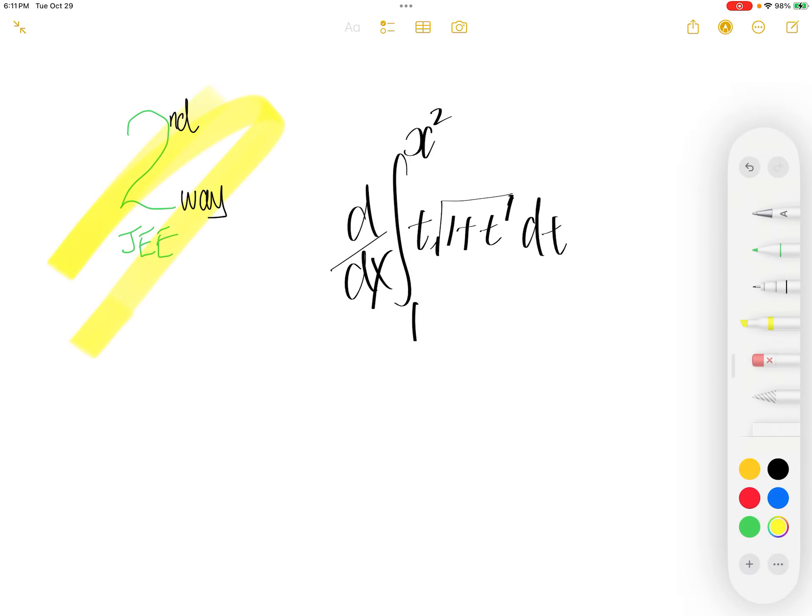Second way, JEE. The derivative of the integral of t times square root of 1 plus t dt, where t goes from 1 to x squared.